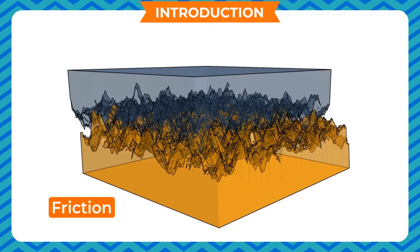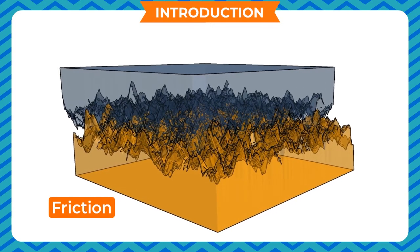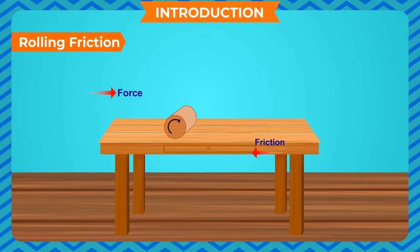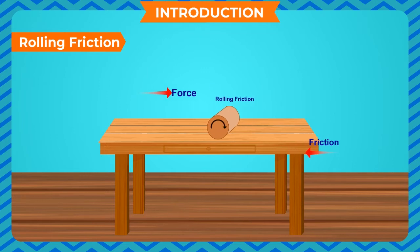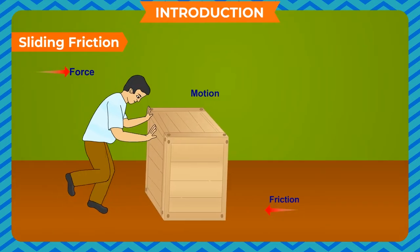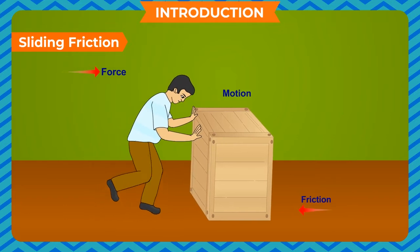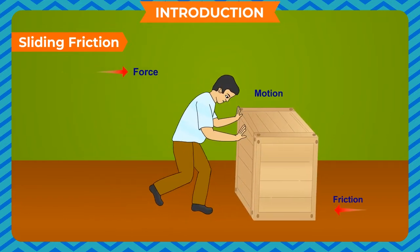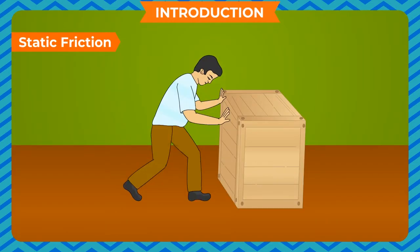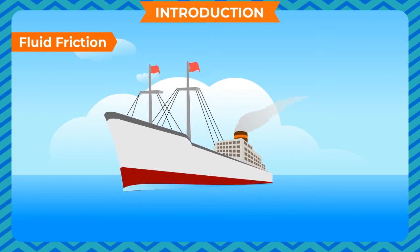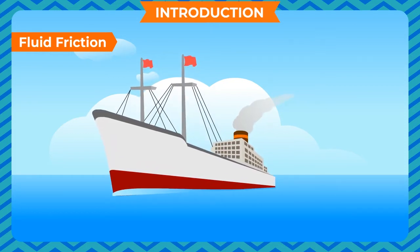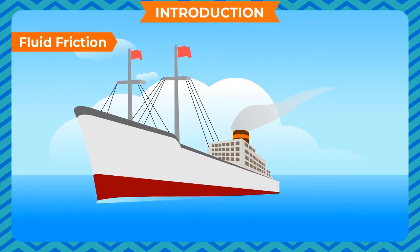Friction is of four different types. Rolling friction comes into play when one object is trying to roll over a surface. Sliding friction is caused when an object slides over another surface. Static friction is the maximum value of friction up to which an object does not move when forces are applied. Fluid friction acts upon objects as they travel through a fluid, liquid, or gas.